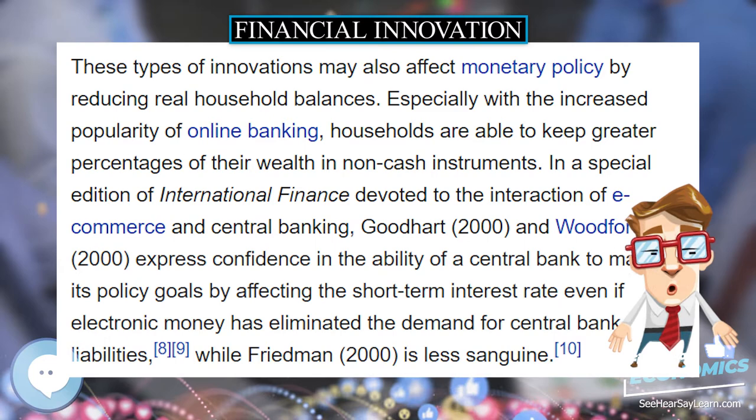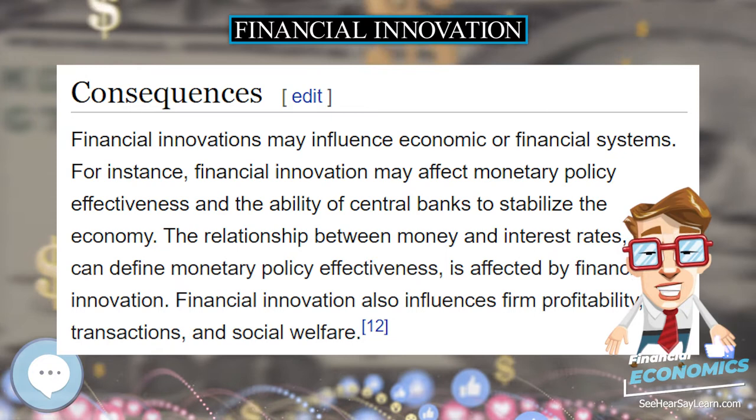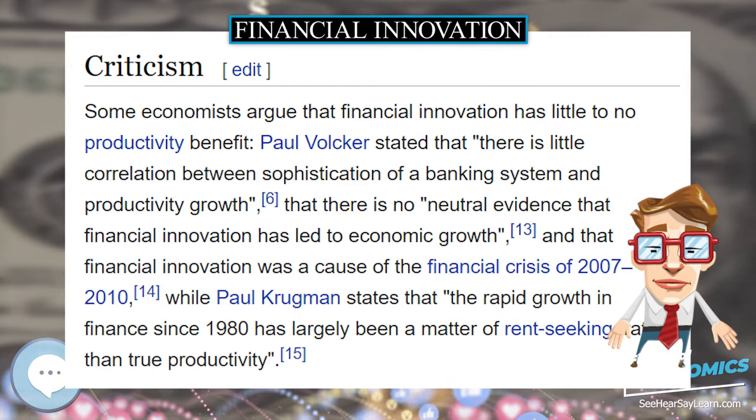The capital asset pricing model, first developed by Jack L. Treynor and William F. Sharpe, suggests that investors should fully diversify and their portfolios should be a mixture of the market and a risk-free investment. Investors with different risk/return goals can use leverage to increase the ratio of the market return to the risk-free return in their portfolios.